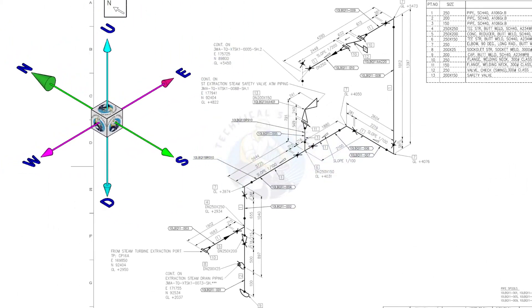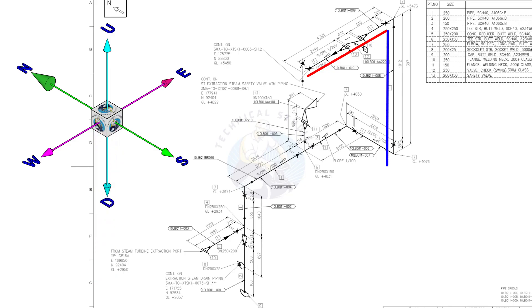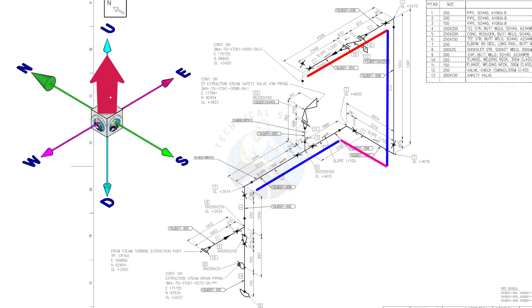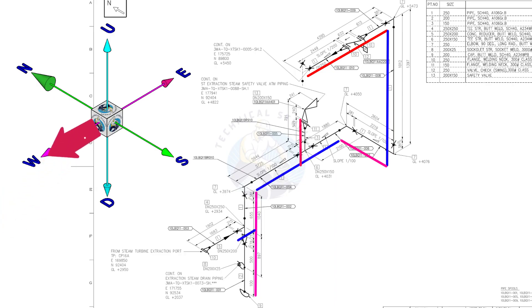Let's take a look at the piping's directions. Suppose this is where the pipe begins. The pipe goes to the east, then turns down 90 degrees, goes to the north 90 degrees, then turns 90 degrees to the west. From the T, the pipe goes up. From here the pipe turns 90 degrees downward. From the T, the branch goes to the west. The Sokolet branch connection is in the north direction.